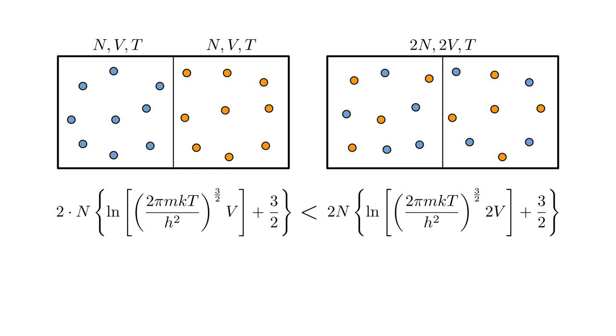And if we replace the divider, the system does not return to its original state. The blue and orange atoms remain mixed. So we can argue that the entropy remains at the higher value instead of decreasing.